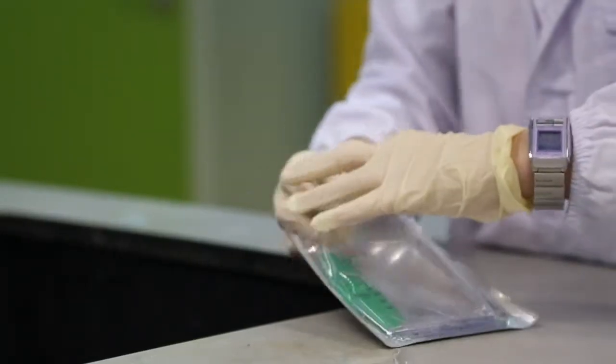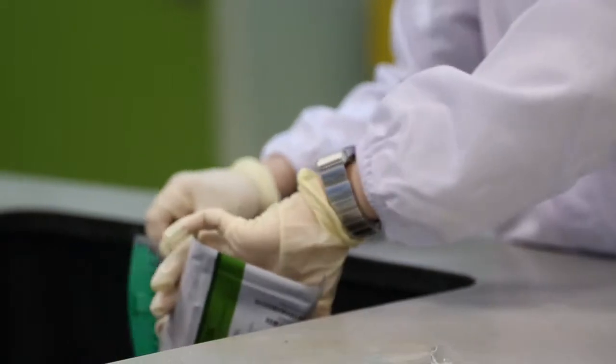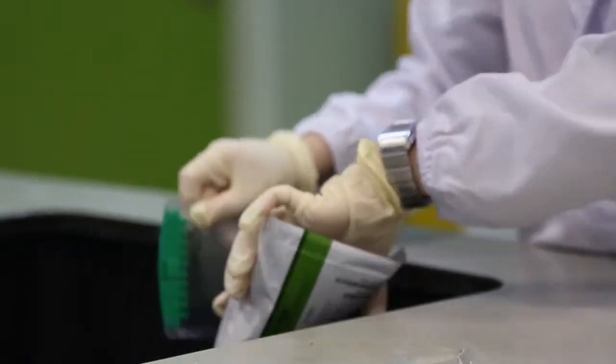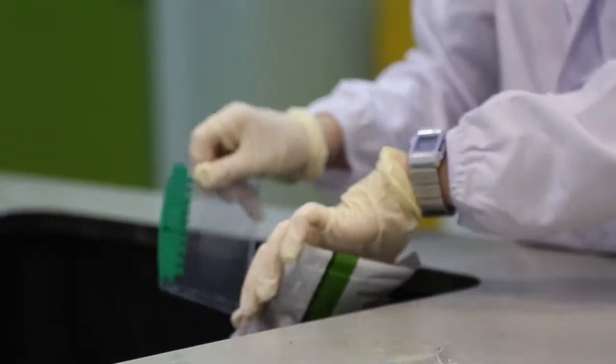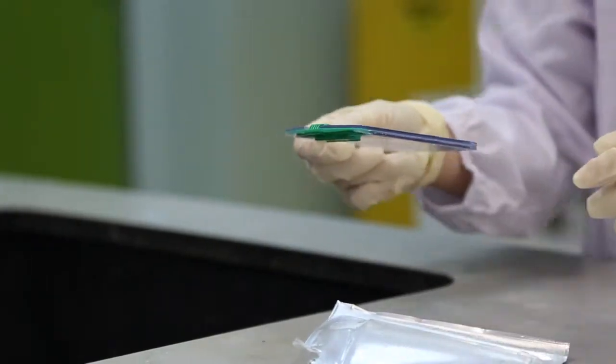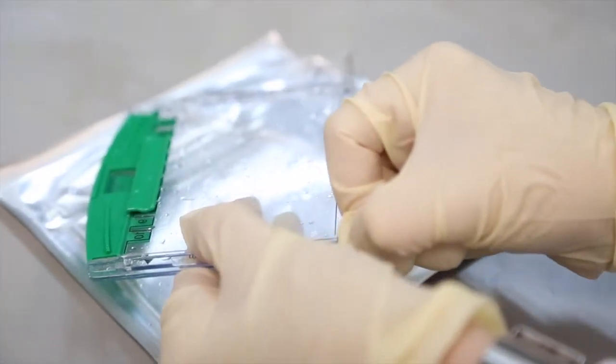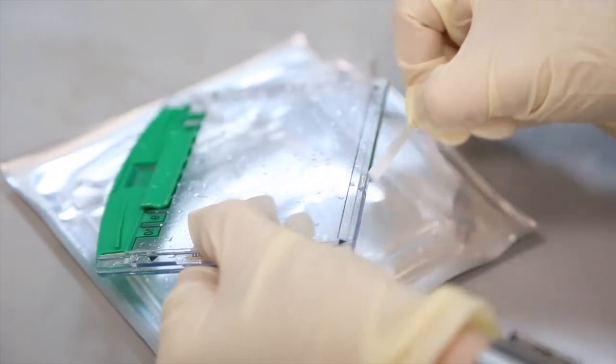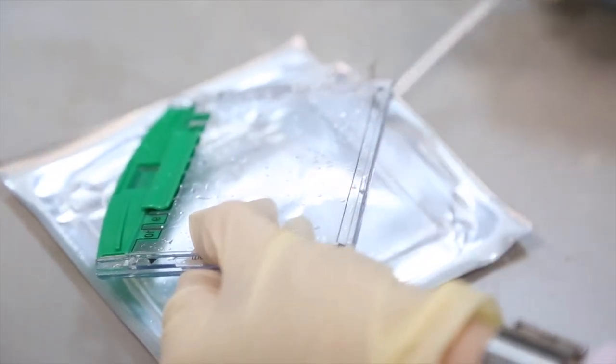Meanwhile, remove a piece of ready-gel cassette sandwich from the storage pouch and cut along the line at the bottom to expose the bottom edge of the gel. This ready-gel cassette contains polyacrylamide gel, which is the supporting medium for this experiment.